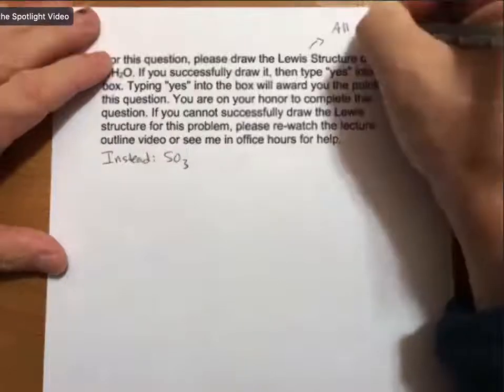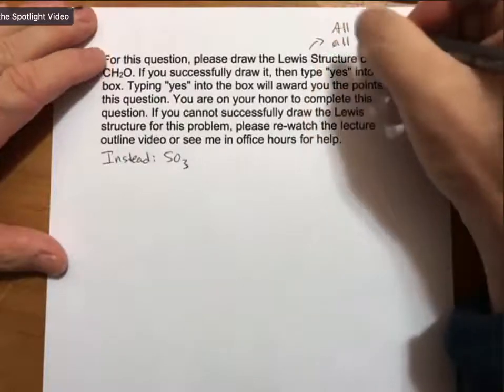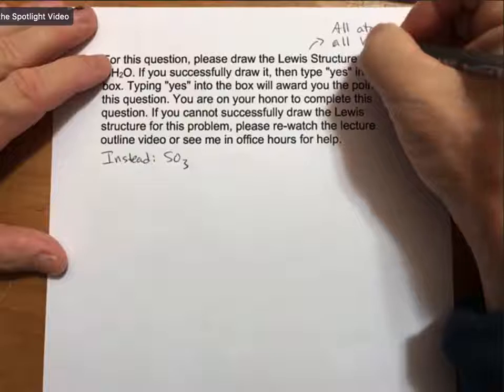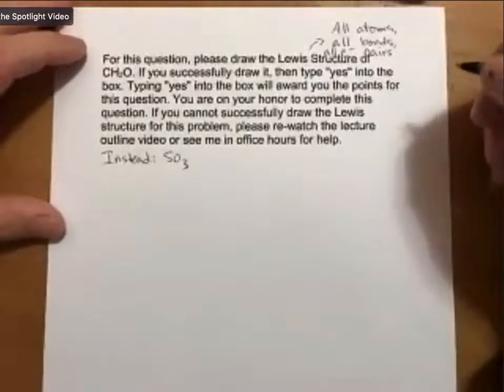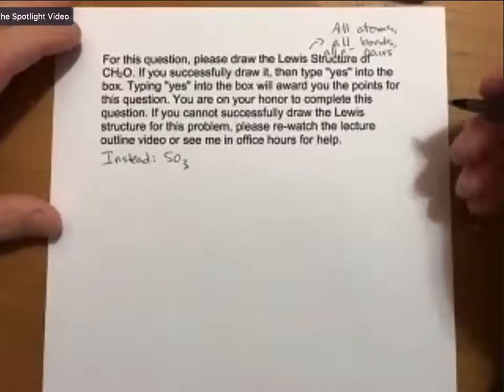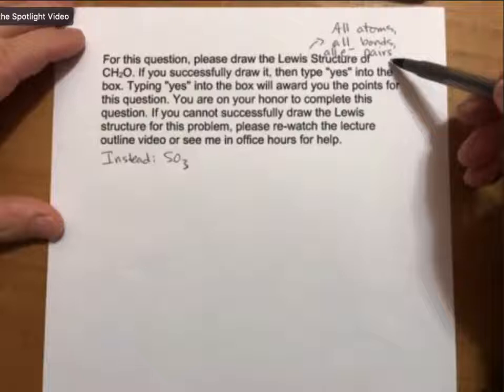All atoms, all bonds, and all electron pairs. That's my definition of a Lewis structure, and it will usually say that, certainly on exams. So Lewis structures, all atoms, all bonds, all electrons. Electrons are usually the only thing that people forget.